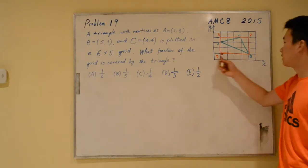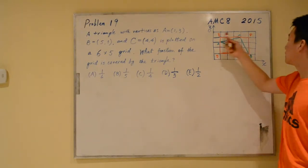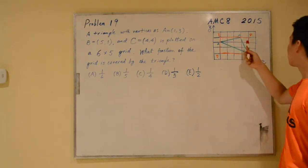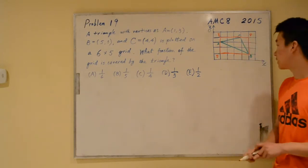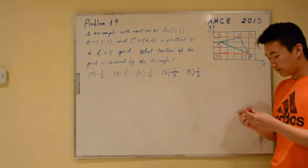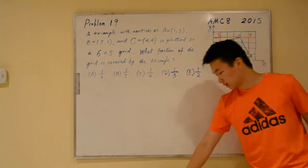It's ABD, ACE, and also BCF. So, let's first find the area of all these.